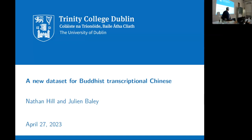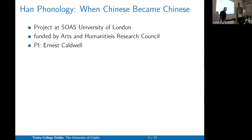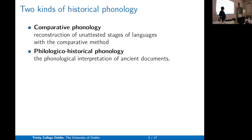This is a new dataset for Buddhist transcriptional Chinese. It comes from a project called Han Phonology: When Chinese Became Chinese, run at SOAS University of London and funded by the Arts and Humanities Research Council. The PI is Dr. Urs Caldwell. The project is about how Chinese was pronounced during the Han Dynasty.